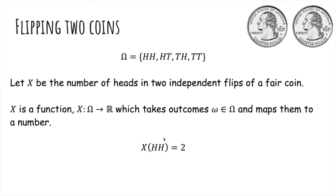So for example, X of heads-heads is two because there's two heads for this outcome. X of heads-tails is one because there's only one head. X of tails-heads is also one, and X of tails-tails is zero.